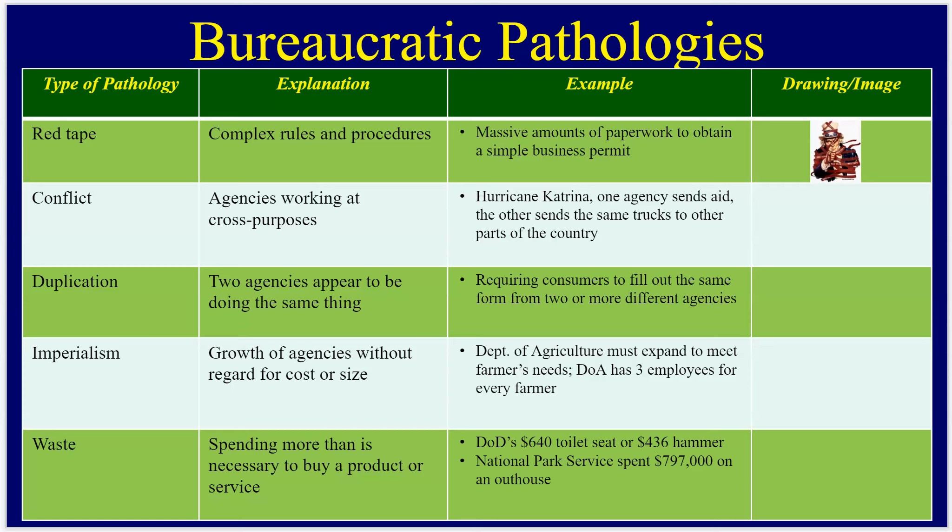The second pathology is conflict — one agency says one thing and another says something different. Hurricane Katrina was a great example: one agency was sending trucks full of ice to places like St. Louis without any further guidance about what to do when they got there. Meanwhile, another agency was saying send those trucks to Louisiana. The messages weren't getting through, leading to massive waste of resources that could have helped people who really needed it.